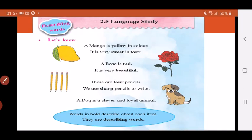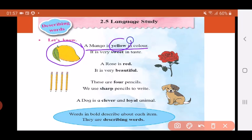Some more examples. A mango is yellow in color. So here we are talking about a mango. But which word is describing something about the mango? Which word is telling us something about the mango? Yellow. So yellow is the describing word in this sentence.